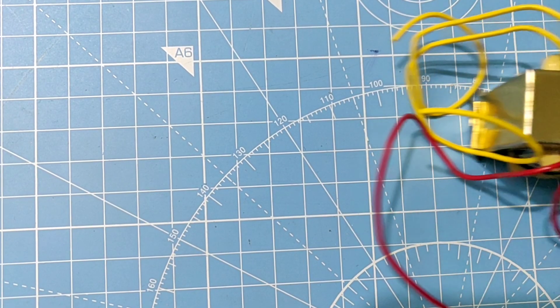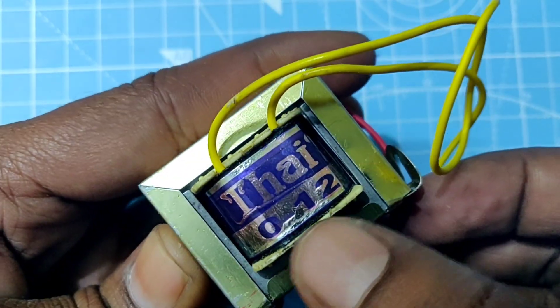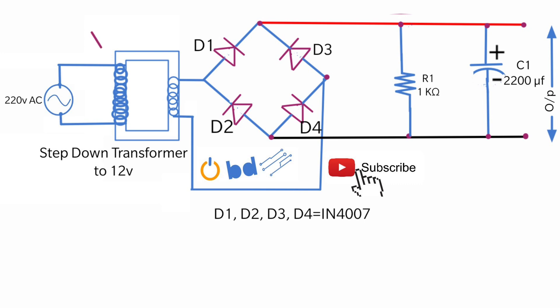This is a step down transformer. It works on the principle of electromagnetic induction. This coil is called the primary coil and this is the secondary coil. You can see that the primary coil windings are more than the secondary coil.